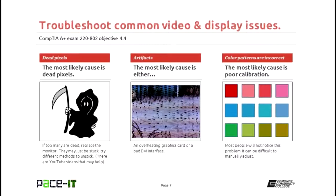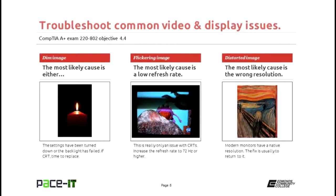Let's talk about color patterns being incorrect. The most likely cause is poor color calibration. Most people will not notice this problem — most of us just aren't that particular about color representation. We see green and can recognize it as green. But if you are a graphics artist or photographer, that may bother you a lot. In which case, you can manually adjust the color settings, though it may take a while because adjusting the hue and saturation of one value may throw off another. You've got to fiddle back and forth.